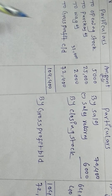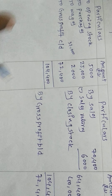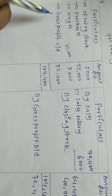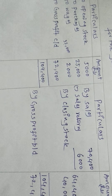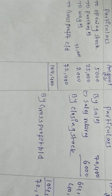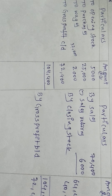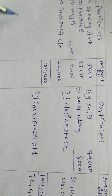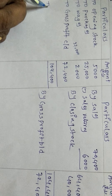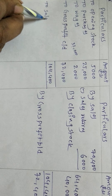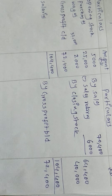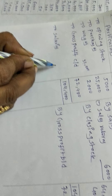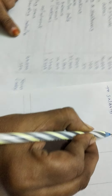In the profit and loss account, indirect expenses go on the debit side and indirect incomes on the credit side. Salaries are indirect expenditure and have an adjustment. The company already paid 500 rupees in salaries, recorded in the inner column.